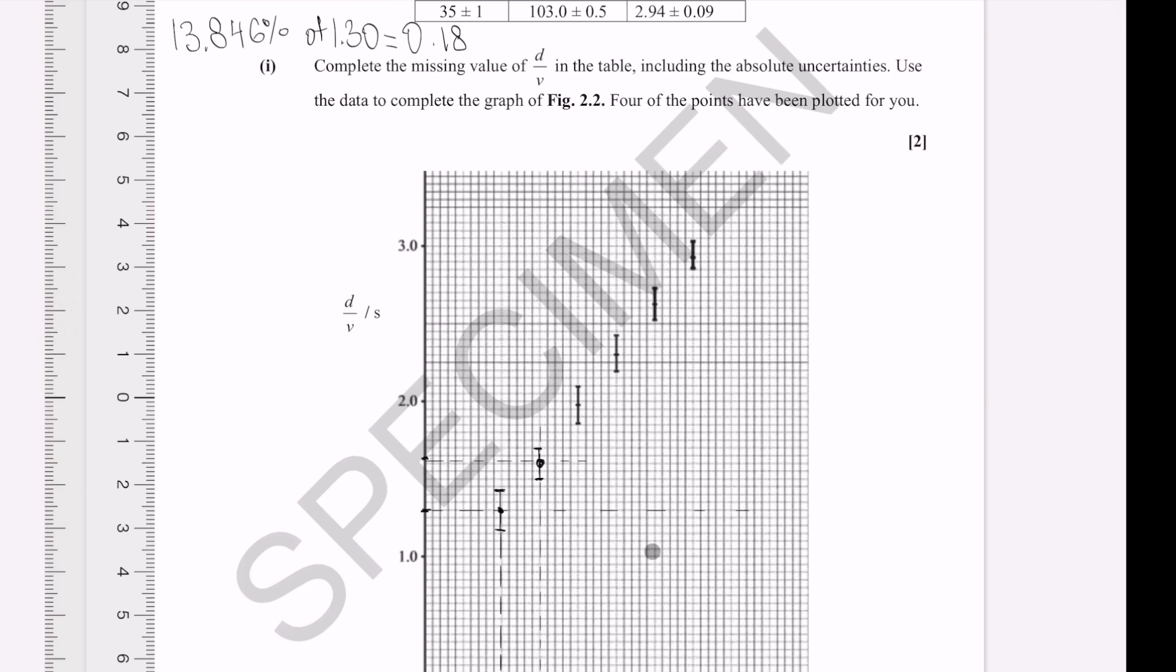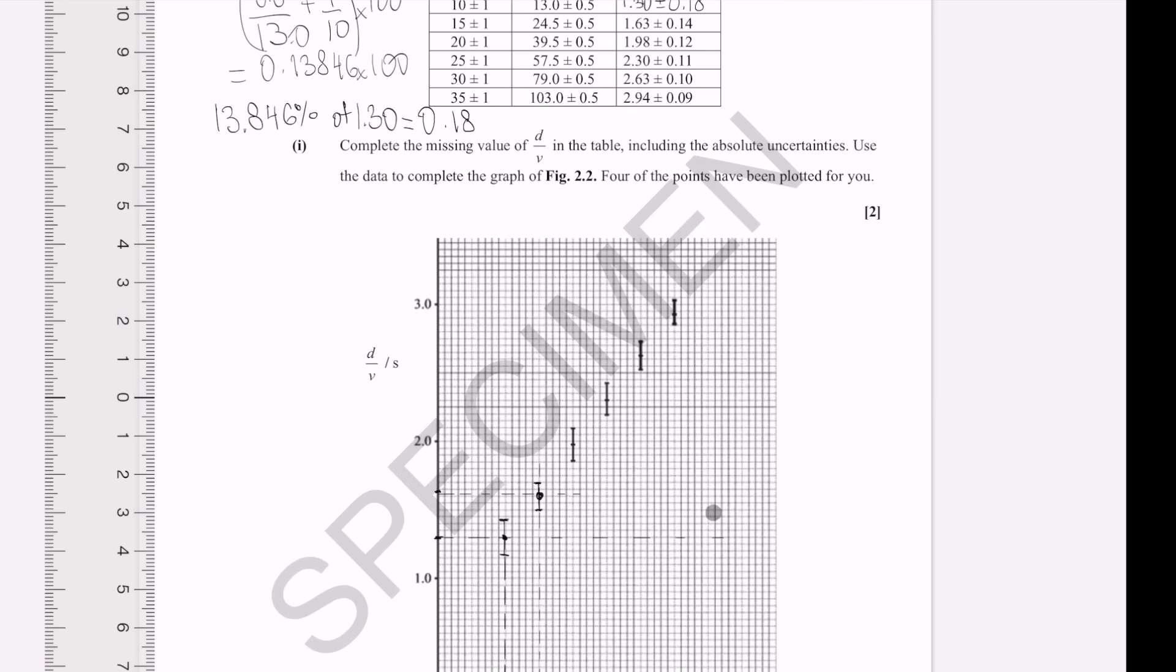Remember, the length of an error bar in either direction from the point is half of the absolute uncertainty. And we also want to complete the table.